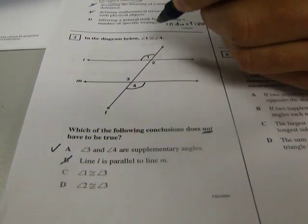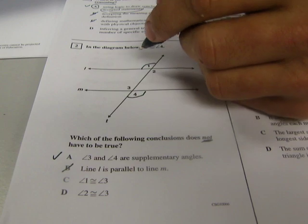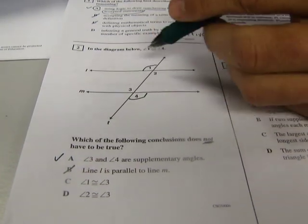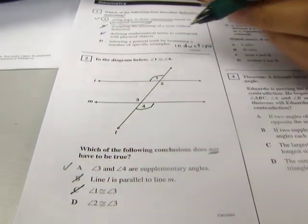Angle one is congruent to angle three. Well, again, if these are congruent, then the lines are parallel. And if that's true, then corresponding angles like one and three are corresponding, that also has to be true. So therefore that cannot be the answer.